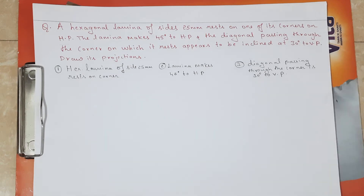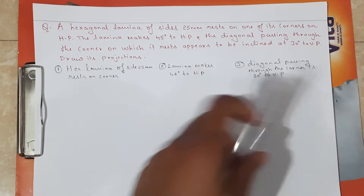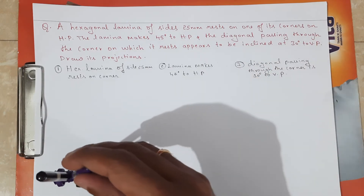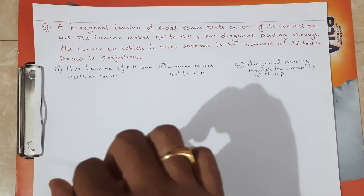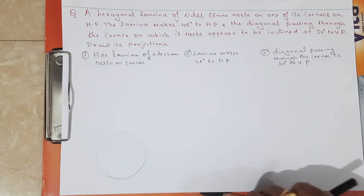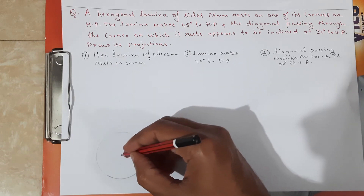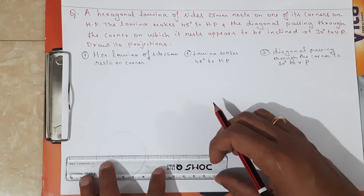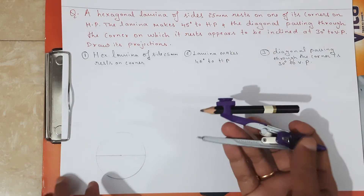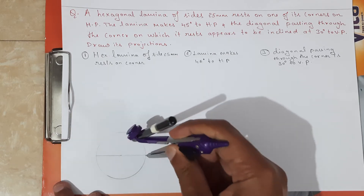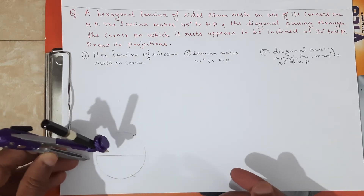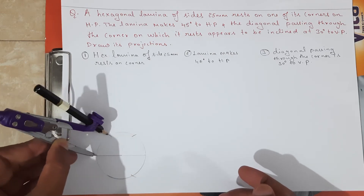First, we are going to draw a hexagonal lamina of 25 mm. With the help of compass and scale, take a measurement of 25 mm. With 25 mm as radius, draw a circle — it must be a thin line. After drawing the circle, draw the horizontal diameter, because we need one of its corners to the right side since it is resting on one of its corners.